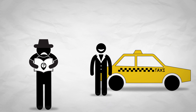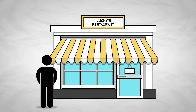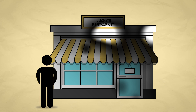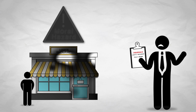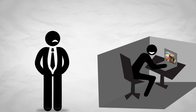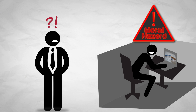A taxi driver has more information about the roads than does a tourist — he may take a longer route in order to get a higher fare. A restaurant owner knows more about the safety of his restaurant than does his insurance company; he might choose to skimp on sprinklers if he's got fire insurance. An employee knows what he's been working on all day, whereas the manager maybe does not, so the employee might choose to goof off rather than do his job.